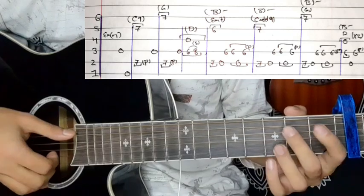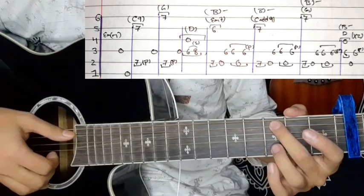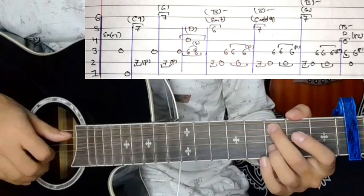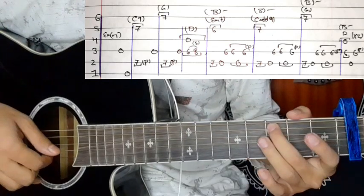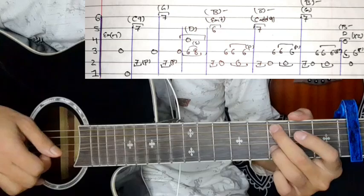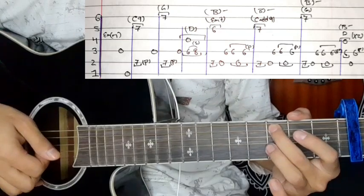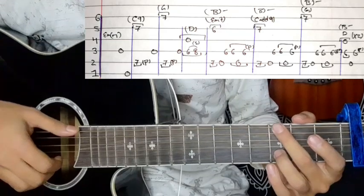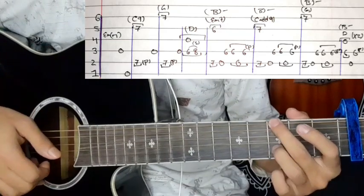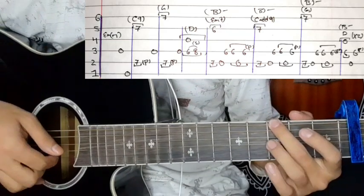After that, play the 7th fret on the fifth string, then 2nd string 7th fret. The picking pattern is 5-2, then pull-off on the fourth string open. Next is G major - sixth string seventh fret, second string seventh, then picking 6-2, followed by pull-off on third string open.